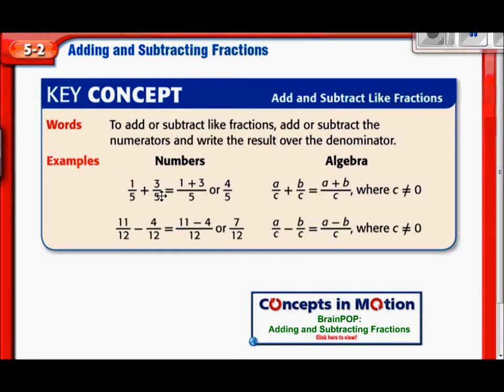Here you can see one-fifth plus three-fifths. You just add the one and the three and you end up with four-fifths, or in the case of eleven-twelfths minus four-twelfths, we simply subtract the eleven minus four and we end up with seven, seven-twelfths.